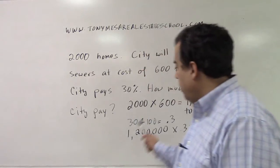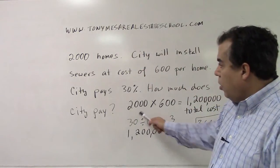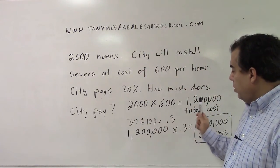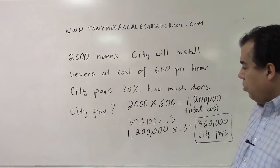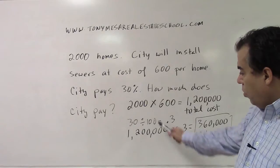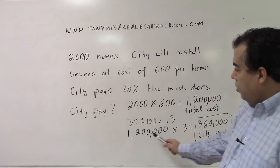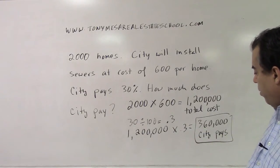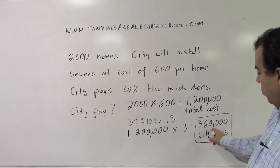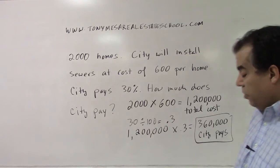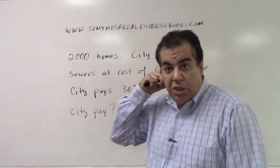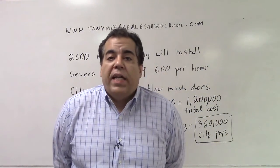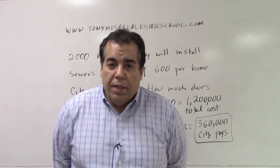So the idea is: 2,000 homes, each house $600, gives $1,200,000 as the total cost. The city is going to pay 30% of that. $1,200,000 times .3 gives you $360,000 — and that is how much the city pays. Alrighty everybody, thank you.